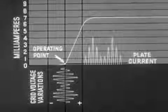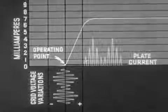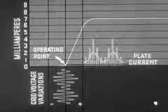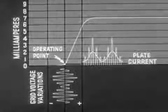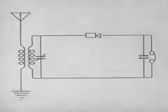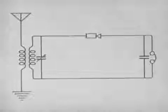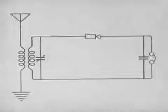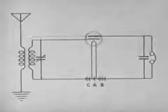The average plate current resulting from the unequal amplification of the positive and negative half cycles will be a direct current pulsating at audio frequency. Such a current will operate the earphones. Here is a diagram of a simple receiving set which uses a crystal as a detector. The vacuum tube is more efficient than a crystal because it also acts as an amplifier.